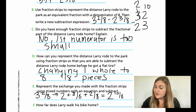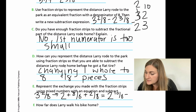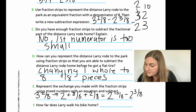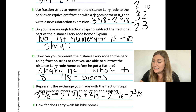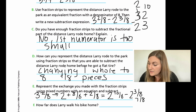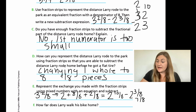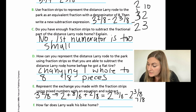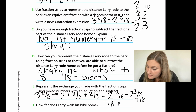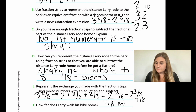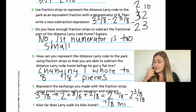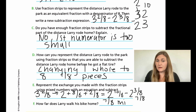So my new front number is two and ten eighths. I subtract two and three eighths. Two minus two is nothing — no more whole numbers. Ten minus three is seven, so my answer is seven eighths. For F, how far does Larry walk his bike home? He walks seven eighths of a mile. I know this concept is tricky, so it's okay if you're still a little confused. I'm going to go over the next page so seeing it again in a different problem will help.